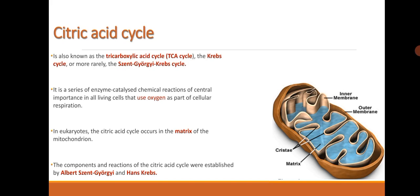Citric acid cycle. It is also known as the tricarboxylic acid cycle, the Krebs cycle, or more rarely the Szent-Györgyi-Krebs cycle. It is a series of enzyme-catalyzed chemical reactions of central importance in all living cells that use oxygen as part of cellular respiration. In eukaryotes, the citric acid cycle occurs in the matrix of the mitochondrion. The components and reactions of the citric acid cycle were established by Albert Szent-Györgyi.